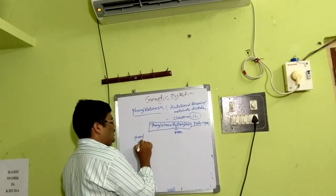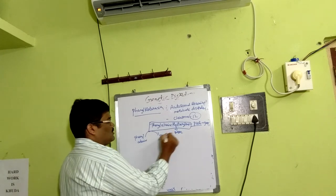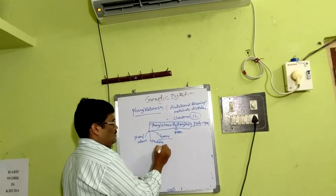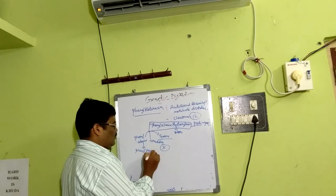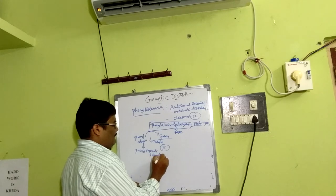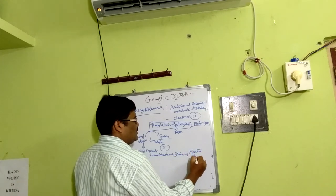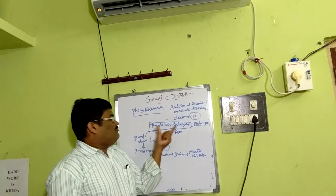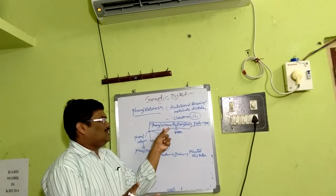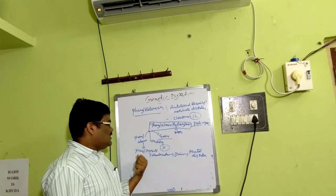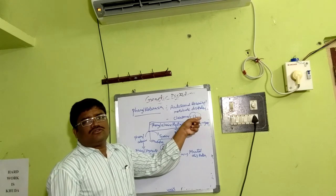In phenylketonuria, due to mutation, phenylalanine hydroxylase cannot be synthesized. Without this enzyme, phenylalanine cannot be converted to tyrosine. Instead, phenylalanine accumulates in the form of phenylpyruvate and other derivatives in the brain, leading to mental disorders. This is the most detrimental principle of phenylketonuria, which is associated with chromosome 12.